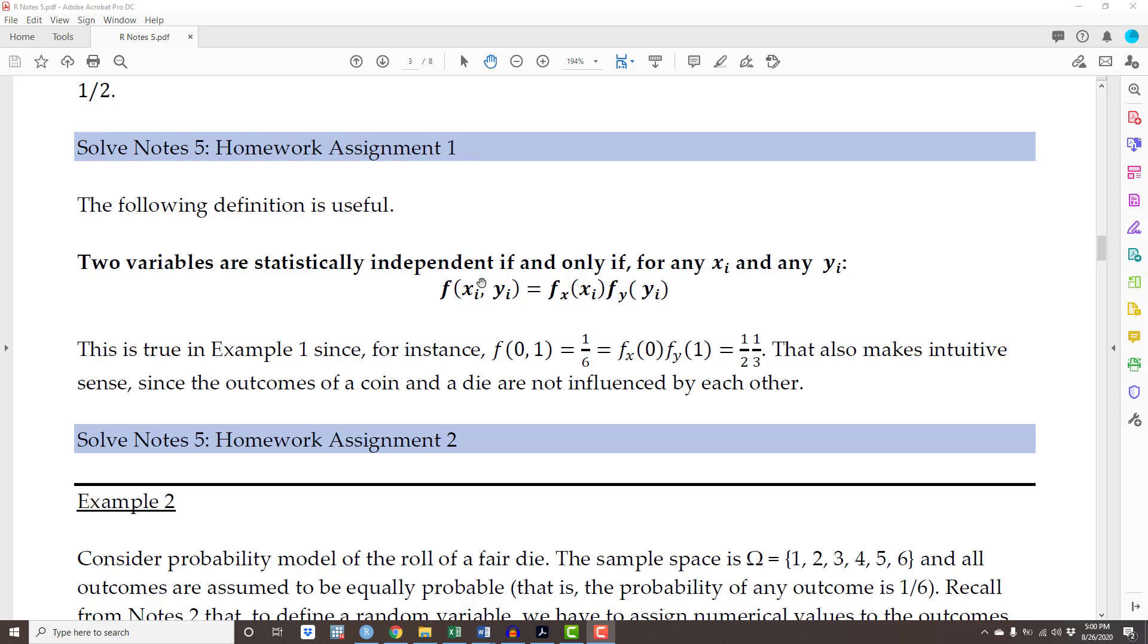Basically, two variables are independent if and only if the probability that x equals a given value xi and the probability that y equals a given value yi is just the multiplication of the probabilities - that is, the probability that x equals xi times the probability that y equals yi.